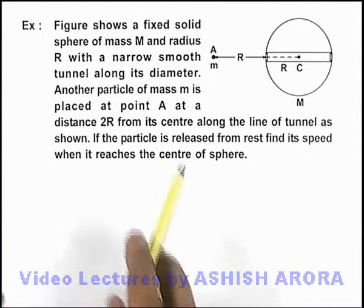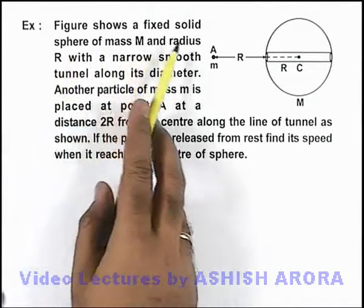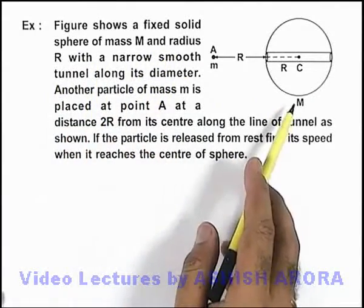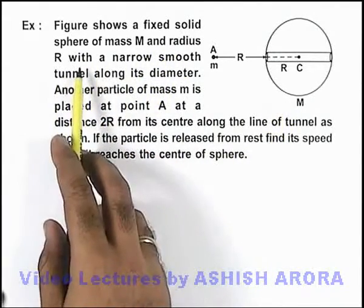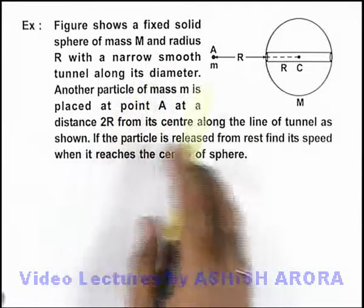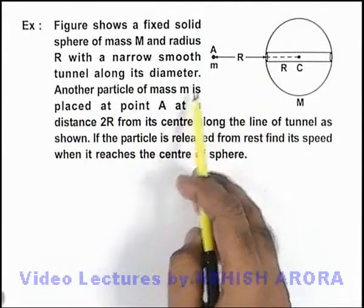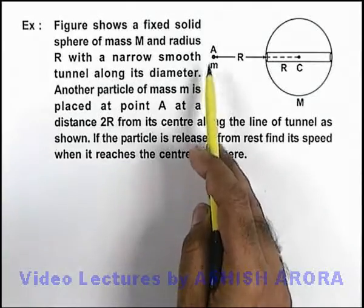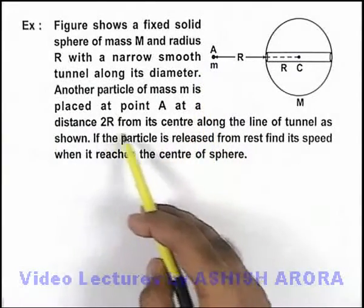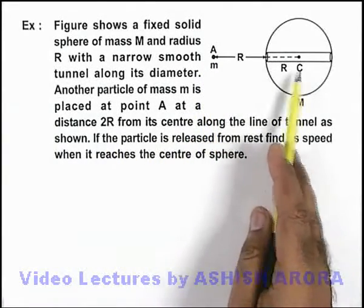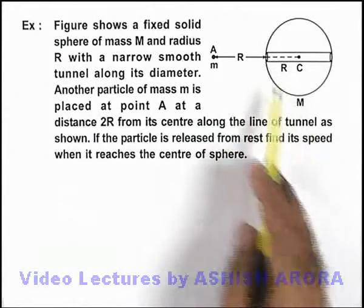In this example, we are given that the figure shows a fixed solid sphere of mass M and radius R with a narrow smooth tunnel along its diameter. Another particle of mass m is placed at point A at a distance 2R from its center along the line of the tunnel, as we can see.